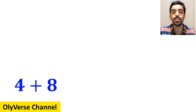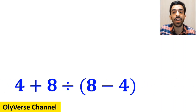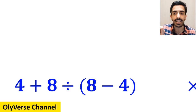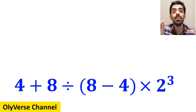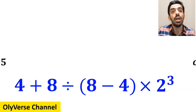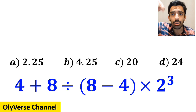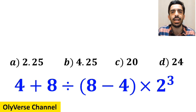What is the value of the expression 4 plus 8 divided by open parenthesis 8 minus 4 close parenthesis, then times 2 to the power of 3? Which option do you think is the correct answer to this question?